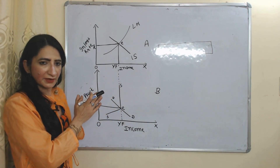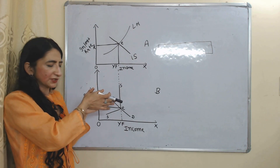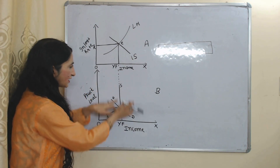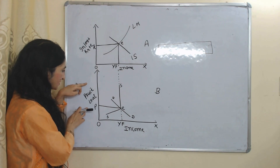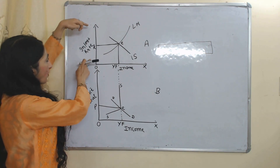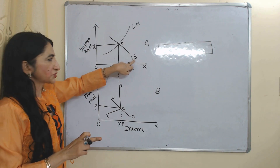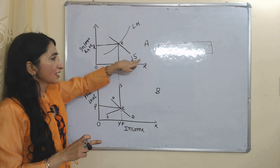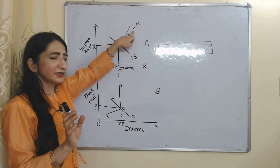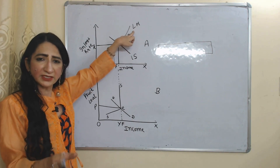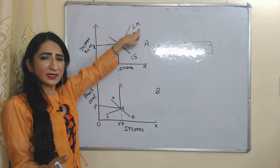Now we understand this theory with the help of a diagram. Here we have two figures, A and B, and both are connected with each other. On the x-axis of both sides we have income, and on the y-axis on this side we have price level, and on the y-axis on the other side we have interest rate. Here, I represents investment, S represents saving, and the IS curve represents equilibrium within the goods market. L represents liquidity — or money demand — and M represents money supply.